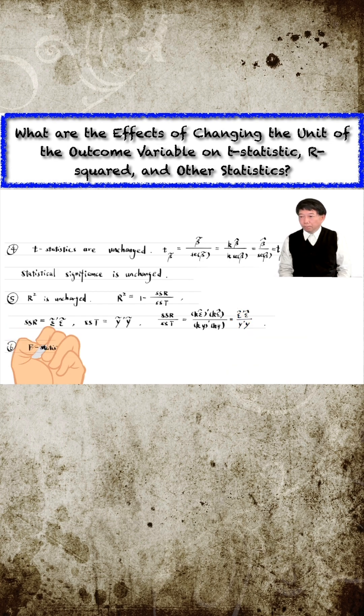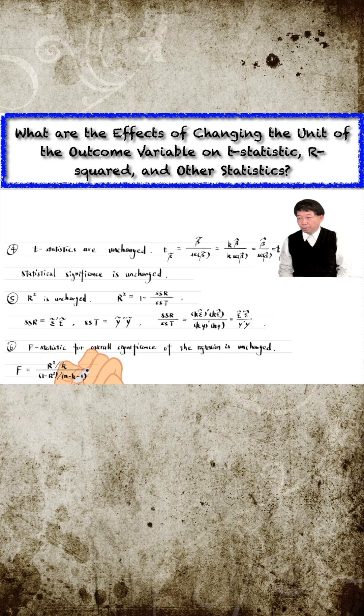The sixth conclusion is about the f-statistic for the overall significance of the regression. It is also unchanged. We can see it from its relation with the r-squared.